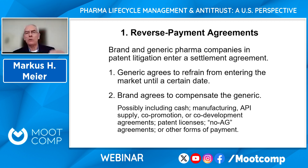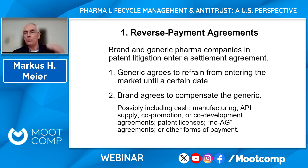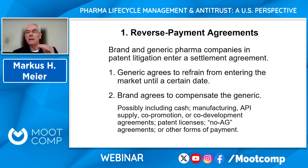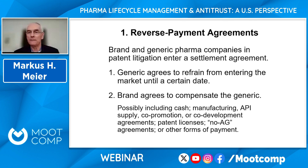The reason it's called a reverse payment agreement is that generally when a patent holder and a putative infringer settle patent litigation outside the pharmaceutical industry, the infringer pays the patent holder for a license to enter. Here, the patent holder — the company that says it has a legitimate patent — is paying the alleged infringer to stay out. That's why it's called a reverse payment.